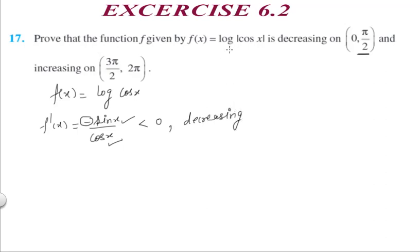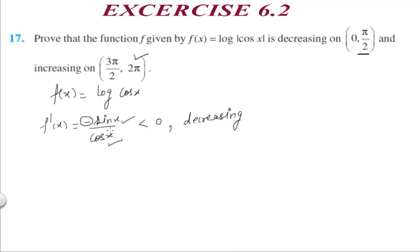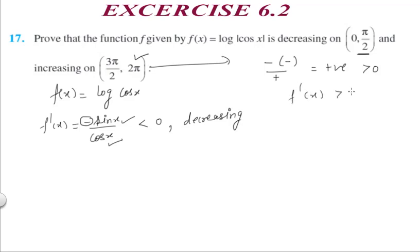In the fourth quadrant (3π/2 to 2π), sin x is negative and cos x is positive. So f'(x) = (1/cos x)(−sin x) gives negative times negative over positive, which is positive. Hence f'(x) > 0 and the function is increasing in the interval (3π/2, 2π).